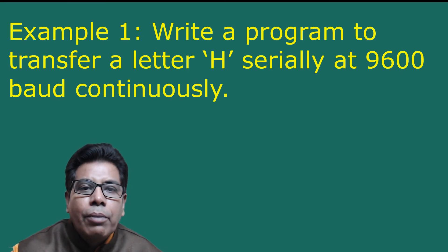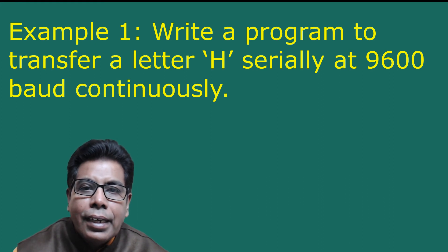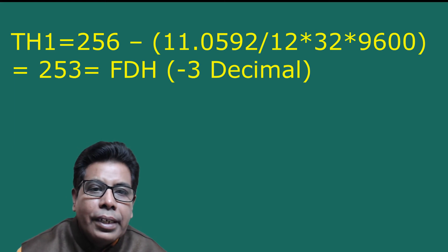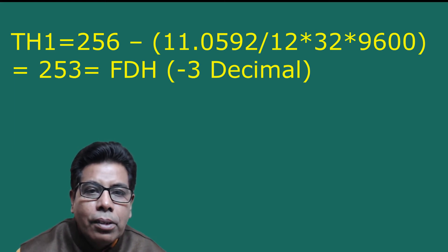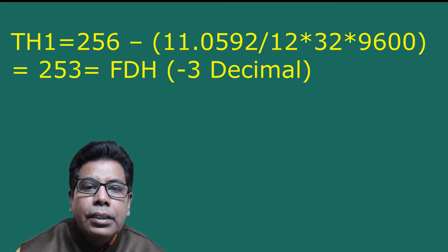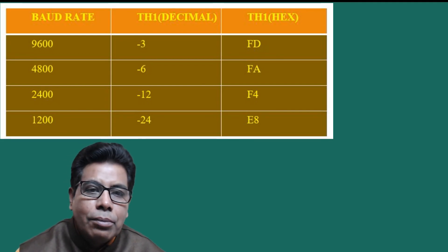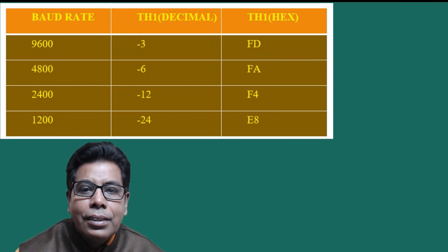Example 1: Write a program to transfer the letter 'H' serially at 9600 baud continuously. The given baud rate is 9600. We calculate TH1 = 256 − (11.0592 MHz / (12 × 32 × 9600)) = 253, which is FDh in hexadecimal or −3 in decimal. From the baud rate table, for 9600 baud the TH1 decimal value is −3 and the hexadecimal value is FDh.